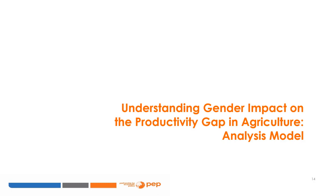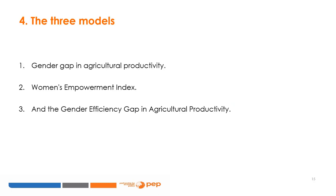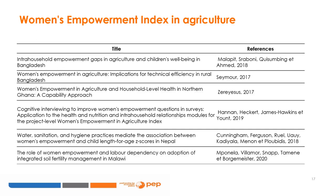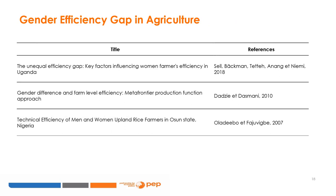Now let us turn to some models for assessing the impact of gender on the productivity gap in agriculture. In the literature, three models are used for gender analysis: the gender gap in agricultural productivity, the women's empowerment index, and the gender efficiency gap in agricultural productivity. References of articles that empirically address the gender productivity gap, the women's empowerment index, and the gender efficiency gap in agriculture in developing countries are provided.